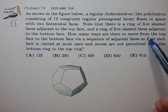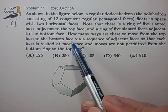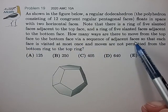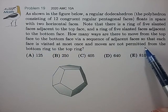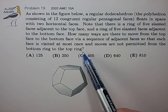How many ways are there to move from the top face to the bottom face via a sequence of adjacent faces so that each face is visited at most once and moves are not permitted from the bottom ring to the top ring?